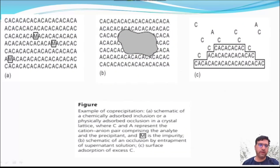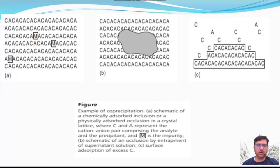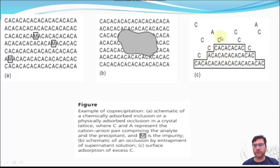In the diagram, C is the cation, A is the anion, and M is the impurity. If chemically adsorbed, this is inclusion; if physically adsorbed, this is occlusion. In panel B, this is occlusion of supernatant solution. In panel C, this shows surface adsorption of excess cations.